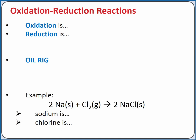Oxidation is loss of electrons. Reduction is gaining electrons. You can remember this using OIL RIG — Oxidation Is Loss, Reduction Is Gain. In the reaction of solid sodium and chlorine gas to produce sodium chloride, sodium is losing electrons, so it is oxidized, and chlorine is gaining electrons, so it is reduced.